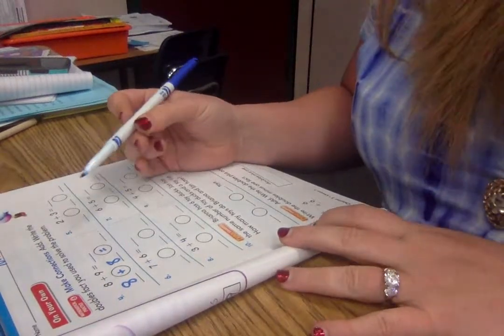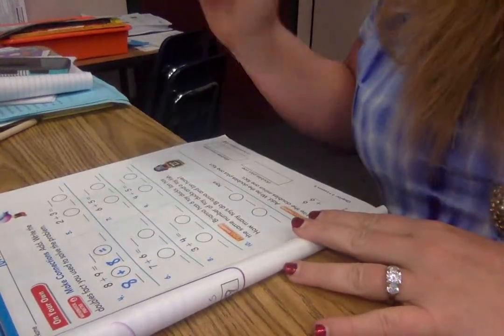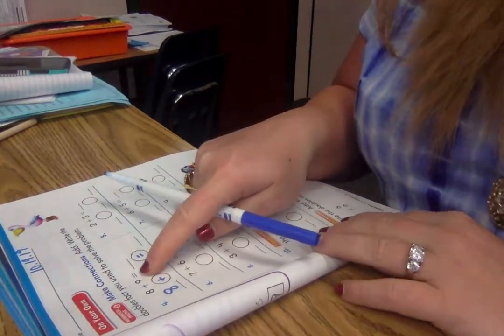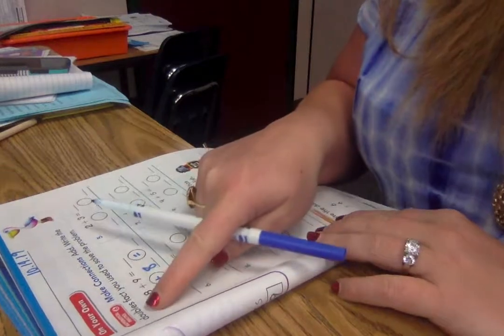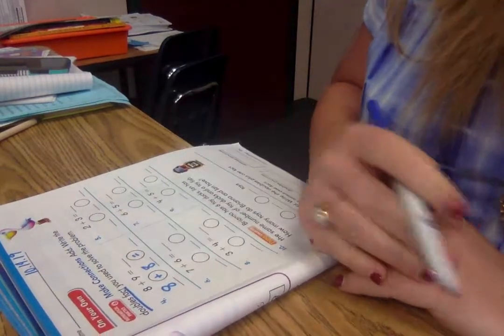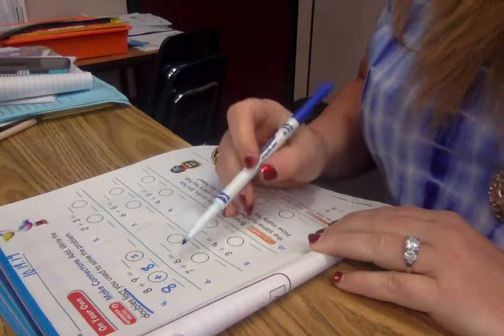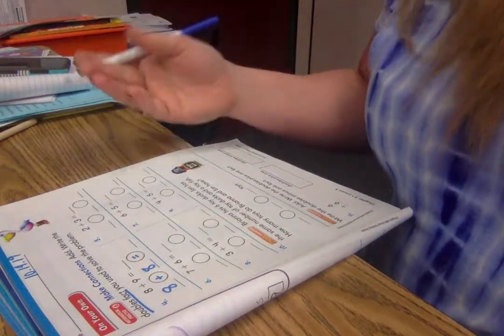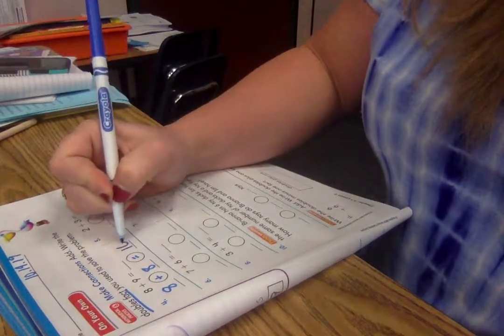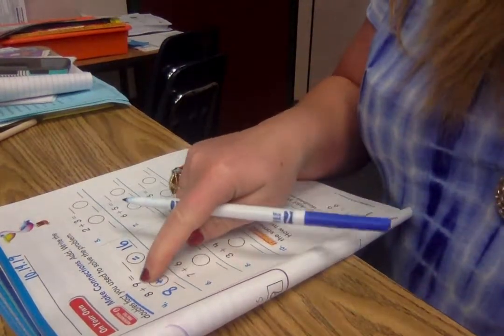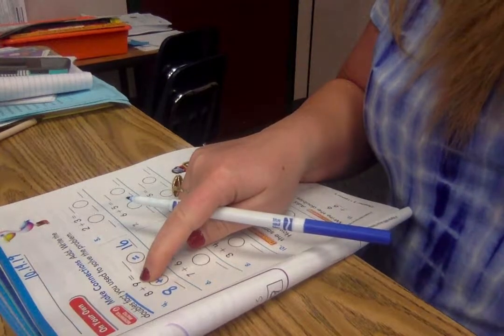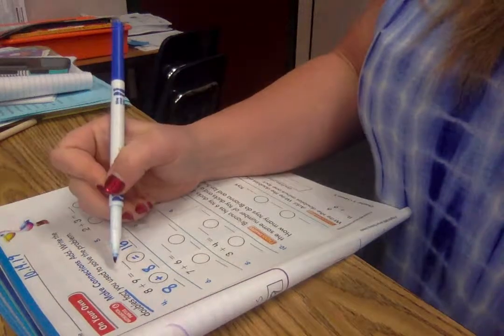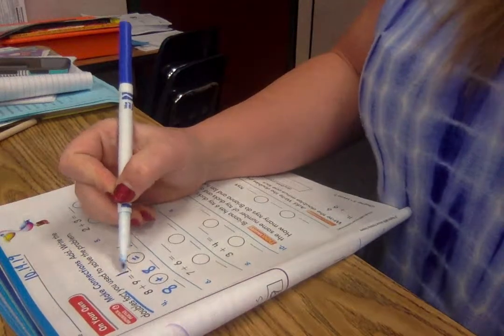Double-double numbers are so sweet. Double-double numbers can't be beat. So if you have an equation that says 8 plus 9, they're asking you to write the doubles fact that helps us. So 8 plus 8 is a total of 16. But this doesn't say 8 plus 8, it says 8 plus 9. So I just need to add 1 more to make a total of 17.